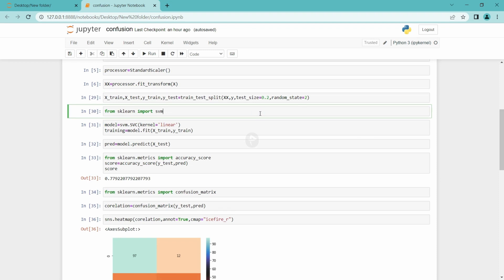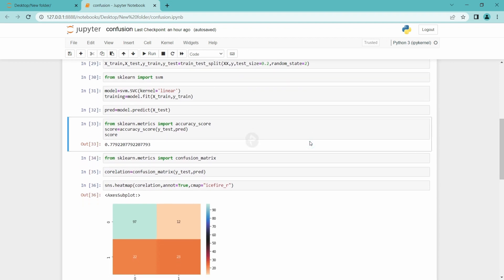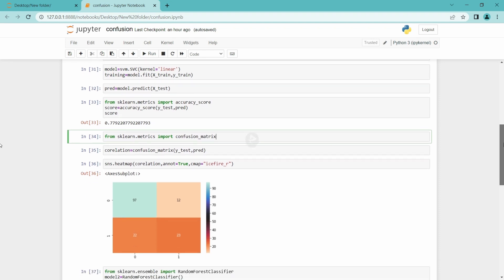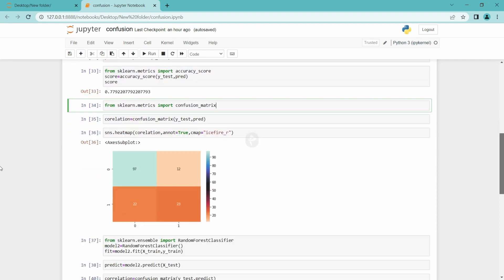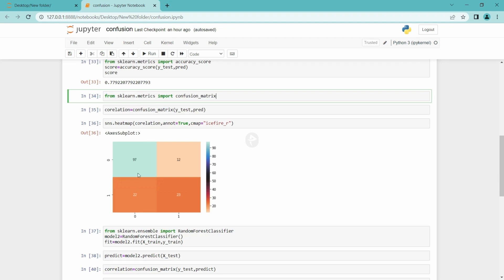The first model I have imported is support vector machine. I have used the model for training and then predicting the values. I have calculated accuracy score and then imported the confusion matrix. With the help of seaborn, I have plotted the confusion matrix here. You can see in 97 cases it predicted correctly the absence of diabetes, that is 0 as 0. But in 22 cases it predicted wrongly, it predicted 0 as 1. So in 22 cases the actual value is 0 but the predicted value is 1. Same here, in 23 cases it predicted correctly 1 as 1. But in 12 cases it predicted wrongly 1 as 0.